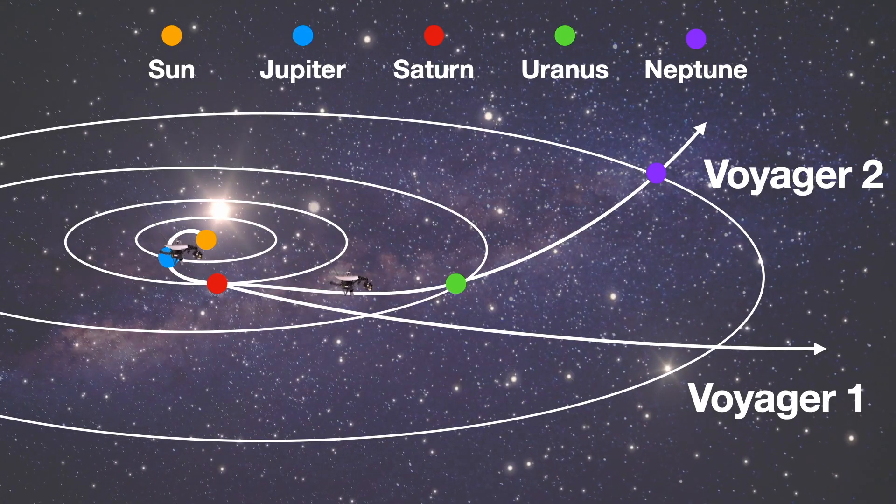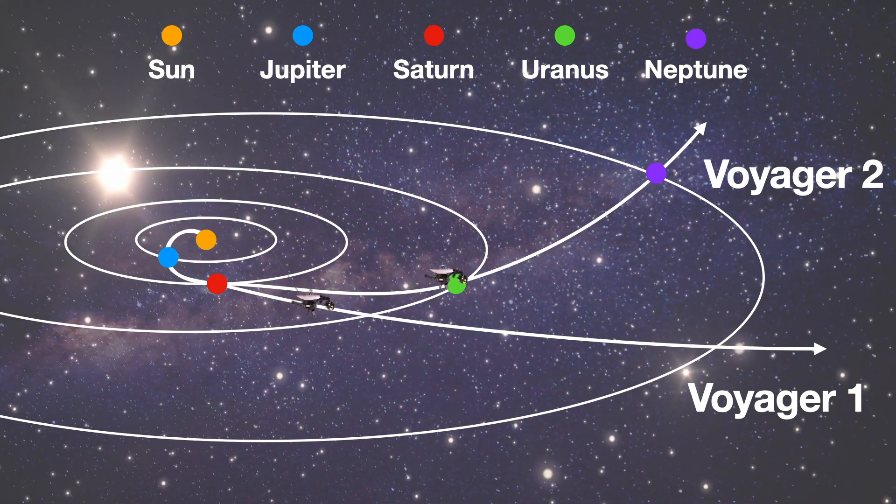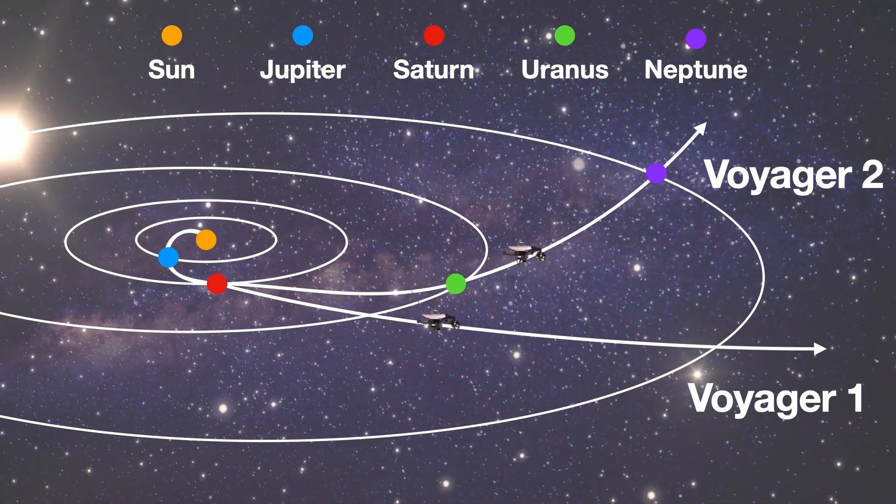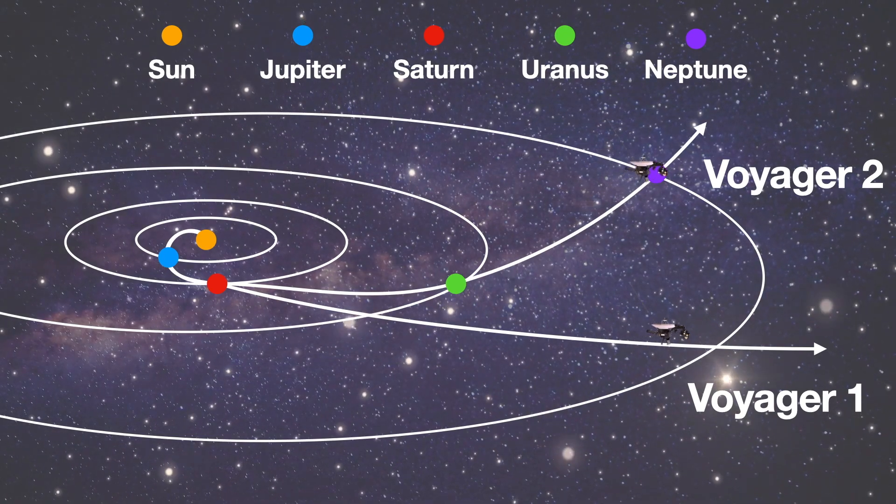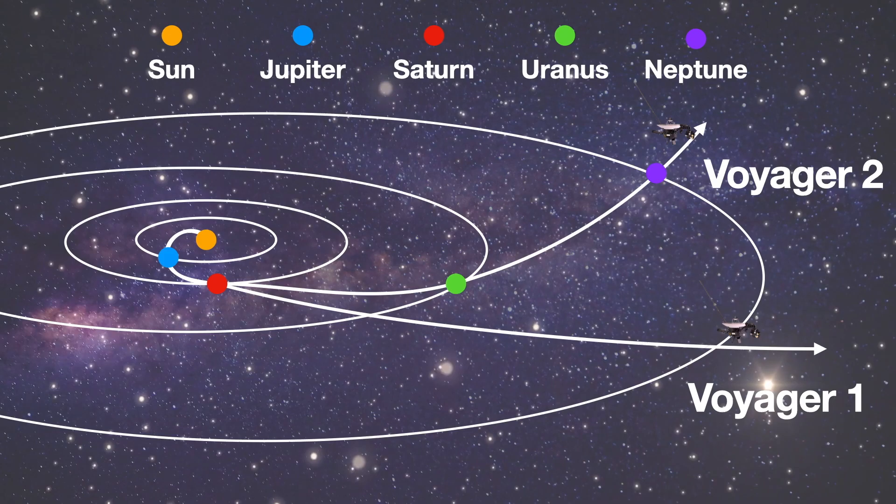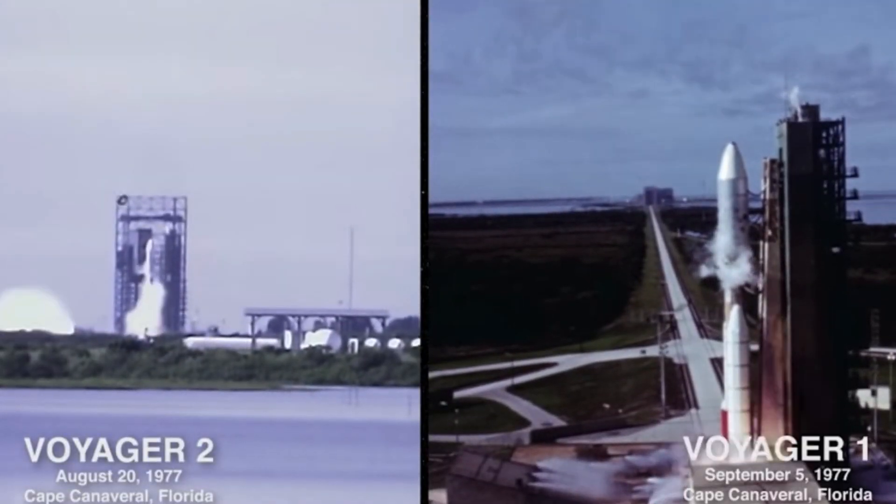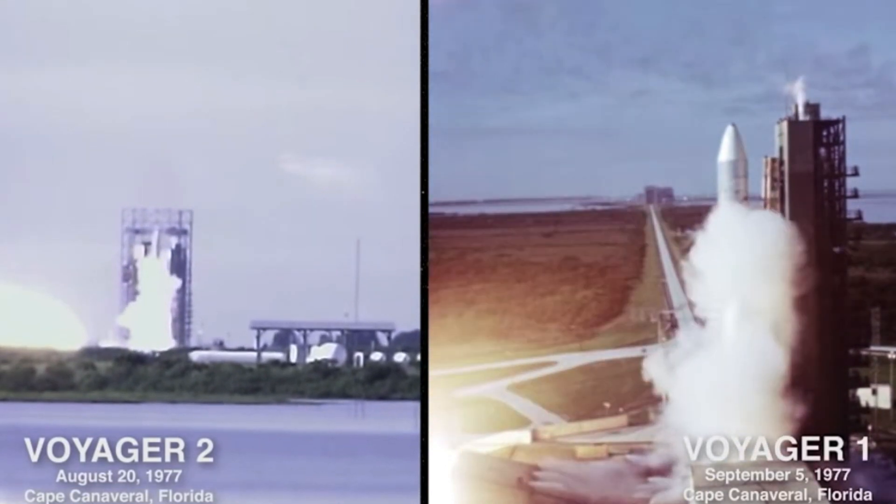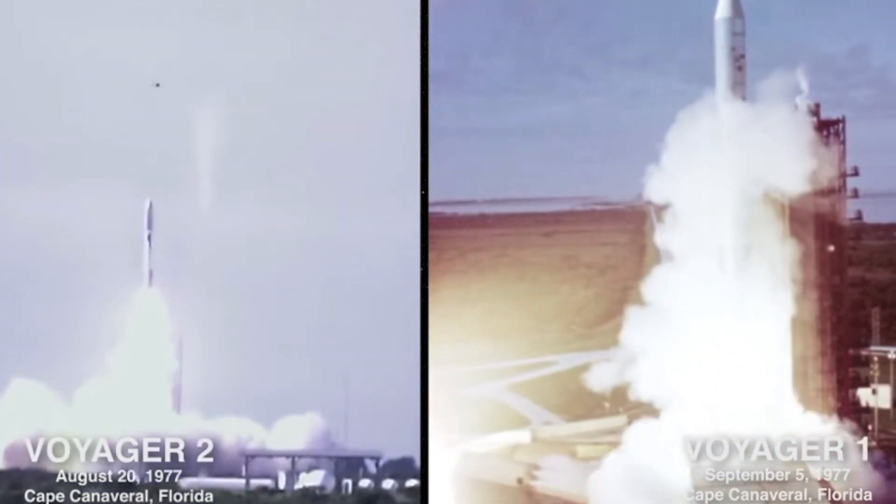The second half of the 20th century presented a rare opportunity to explore the outer solar system. Astronomers realized that Jupiter, Saturn, Uranus, and Neptune would be aligned in such a way that spacecraft would be able to visit multiple planets instead of only one each. This alignment only occurs every 175 years, and NASA took advantage by launching four spacecraft: Pioneer 10 and 11, and Voyager 1 and 2.